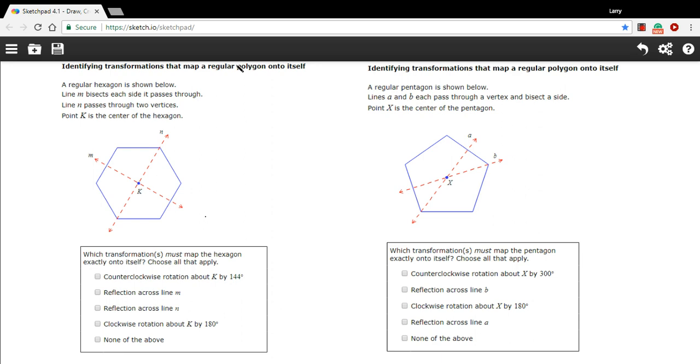So in this one we've got a hexagon and it's got these two lines cut through. If you reflected on either side of these lines, I think you can see they're symmetrical on either side.